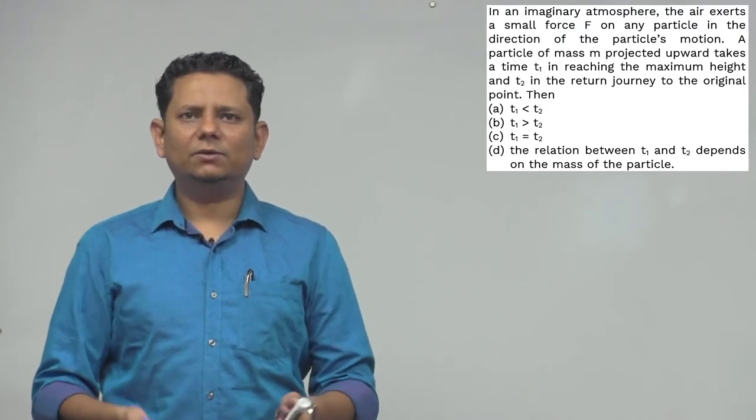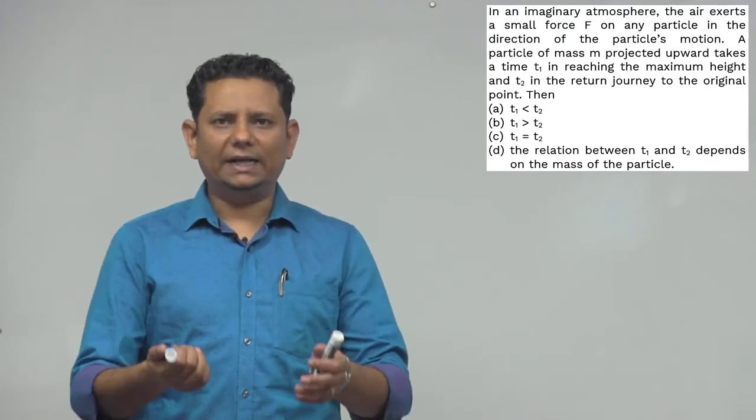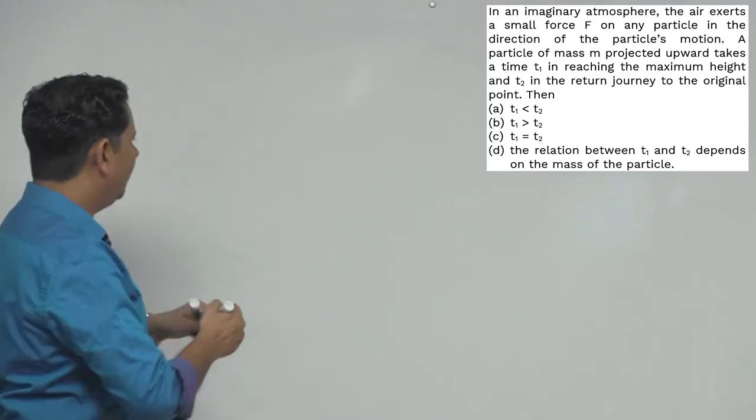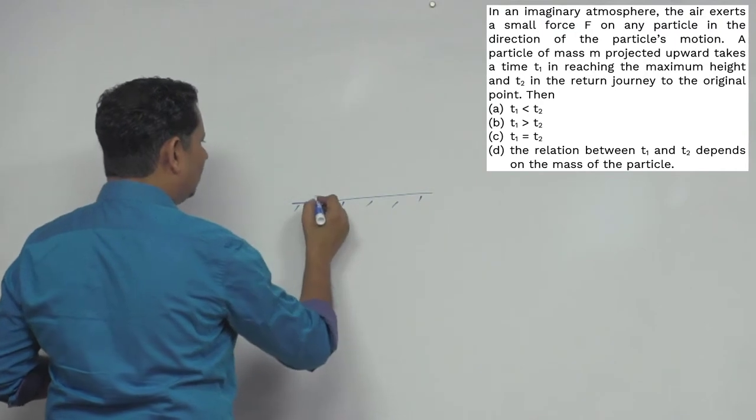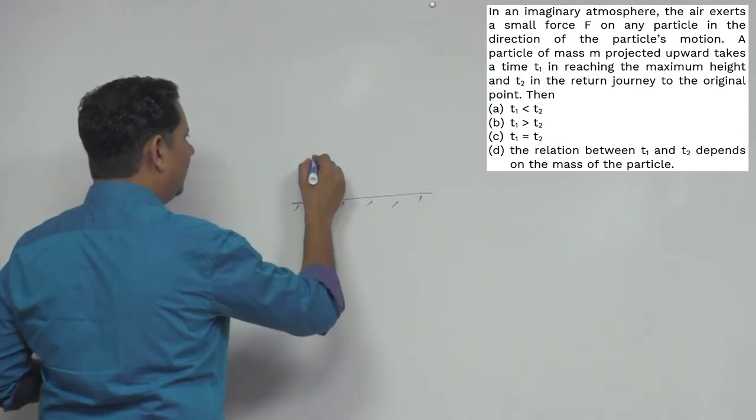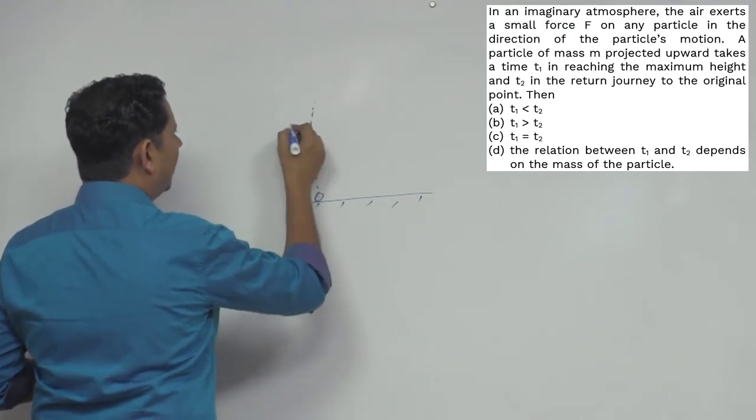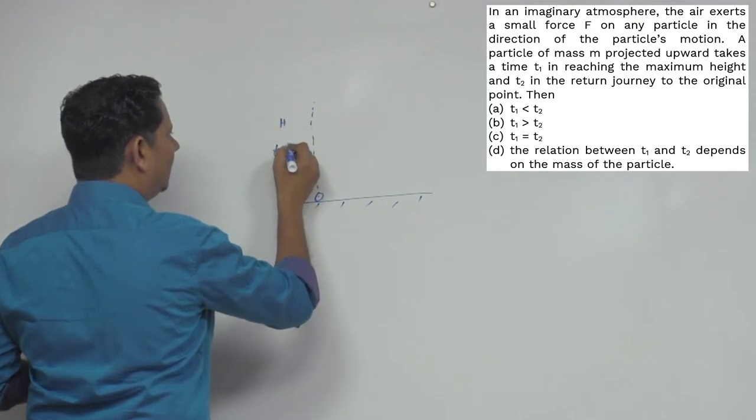The relation between T1 and T2 depends on the mass of the particle. Now in this scenario, the particle is launched here. Let's say height h is traveled, time taken T1 in this upward direction.